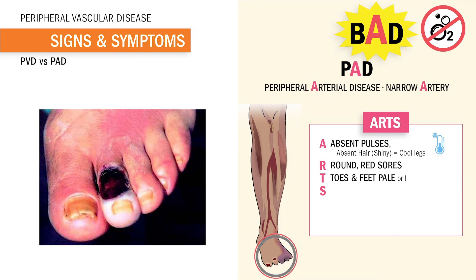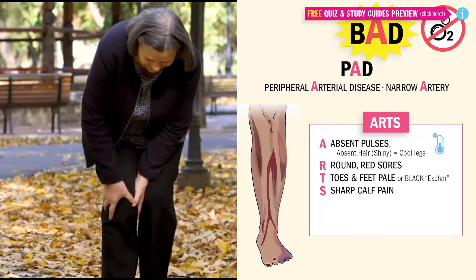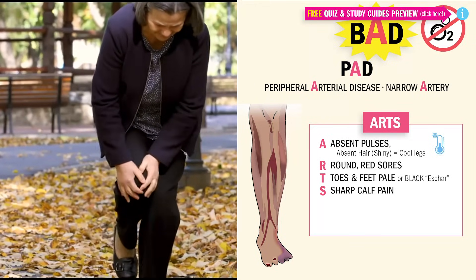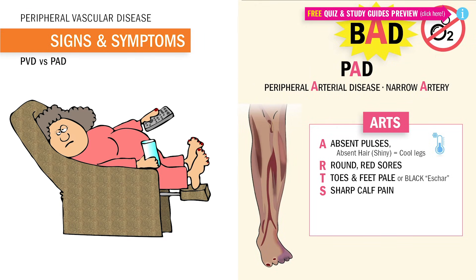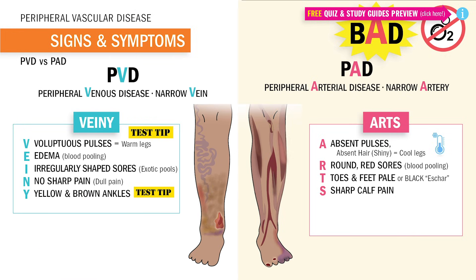T is for toes and feet that are pale from the low oxygen. Or even in advanced stages, we get black toes called eschar. Big NCLEX tip right there — these black, crispy feet are dead tissue. The toes have suffocated to death and usually have to be amputated. Now S is for sharp pain in the calves when stressed, like during exercise or even elevation, like when sitting in a recliner at night. This pain is the warning sign of low oxygen. Big test tip right here — write this down.